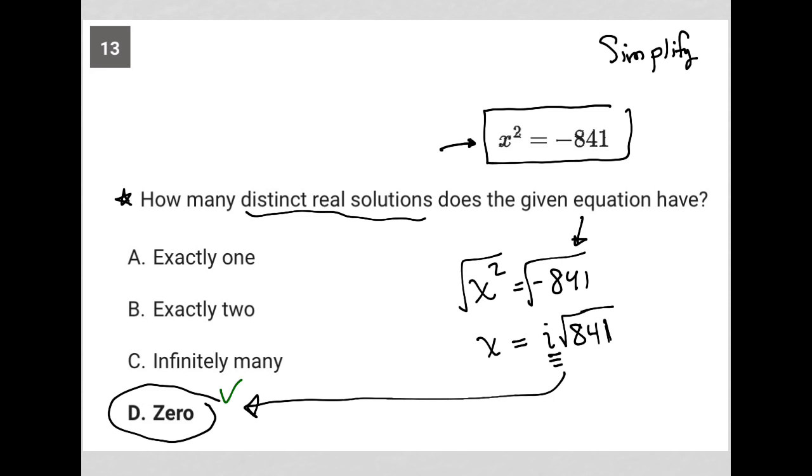We arrive to that conclusion by simplifying the equation. We square root both sides of the equation, and that's how we get zero as our answer.